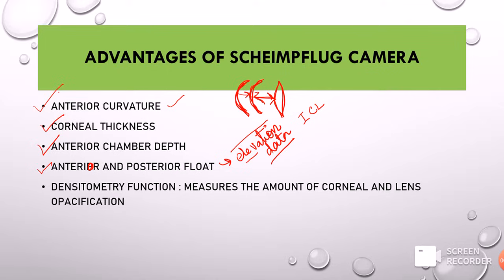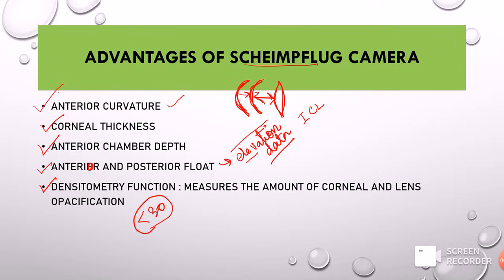The posterior curvature is very important because in conditions like early keratoconus, only the posterior part of the cornea is affected first. One more function specific to Scheimpflug technology is the densitometry function, which tells you about the density — and therefore the clarity — of the cornea and lens. The densitometry value should normally be less than 30, indicating a clear cornea. A value above 30 usually indicates corneal opacity.